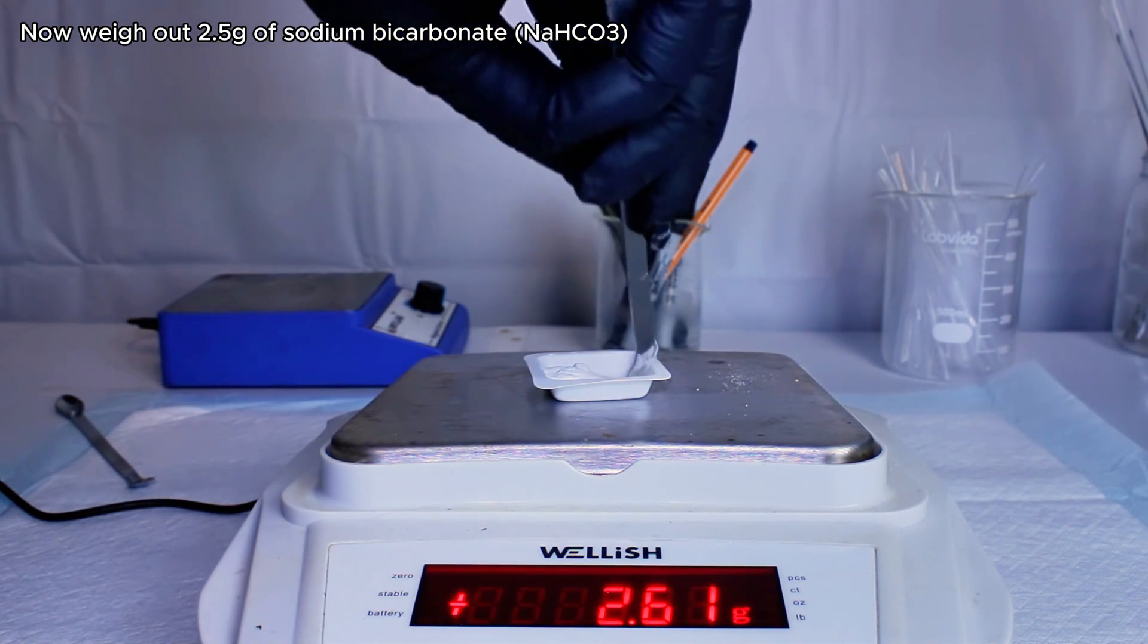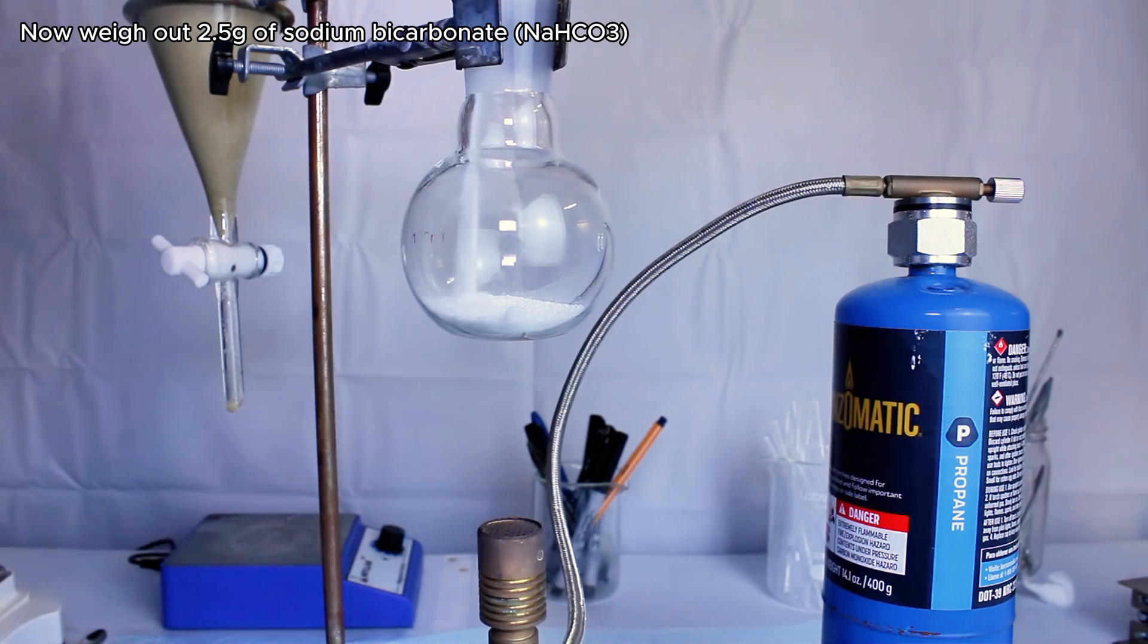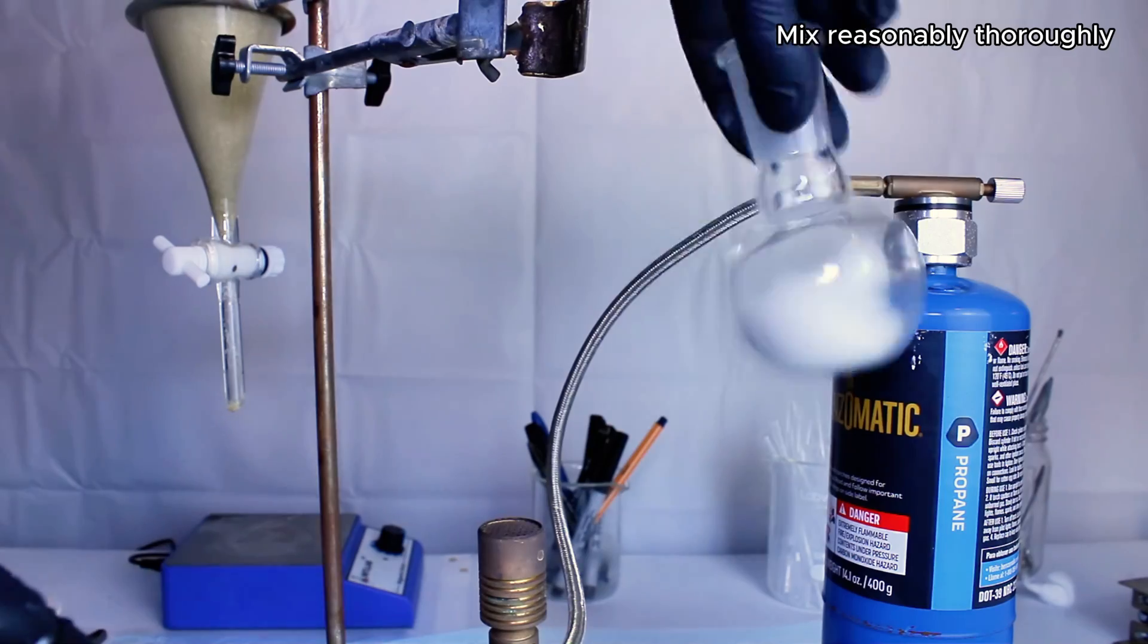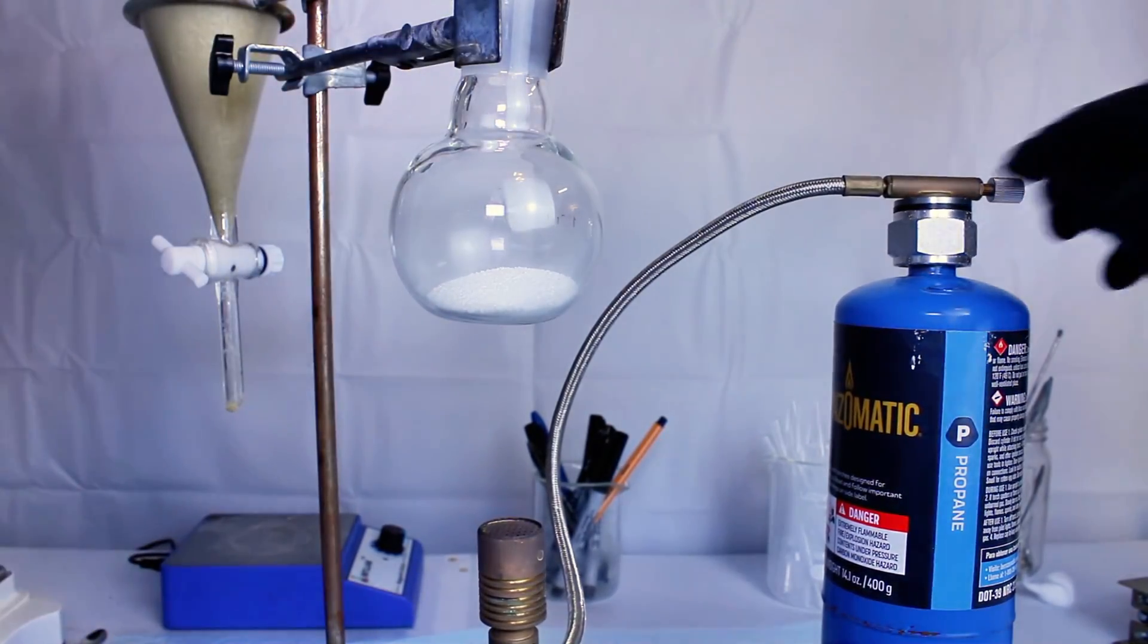I then weigh out half that mass of baking soda, or 2.5 grams of sodium bicarbonate, and add that to the flask as well. I then mix these chemicals together as thoroughly as I can. Honestly a mortar and pestle would probably be best here, but I didn't really feel like it, and it seemed to work fine.